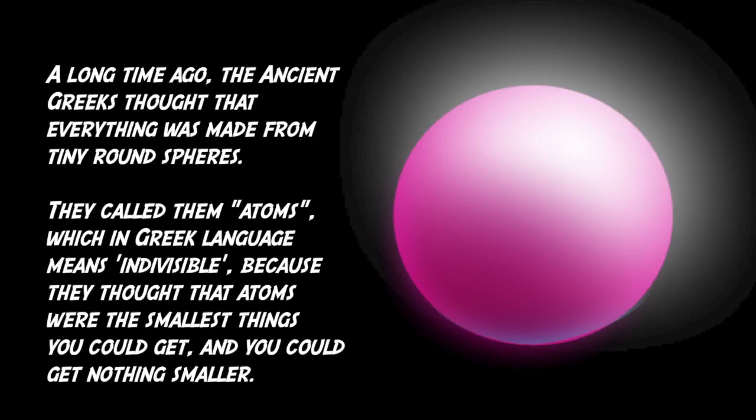A long time ago, the ancient Greeks thought that everything was made from tiny round spheres. They called them atoms, which in Greek language means indivisible. Not invisible, like when Bilbo Baggins puts on that pesky ring. Because they thought that atoms were the smallest things you could get, and you could get no smaller.